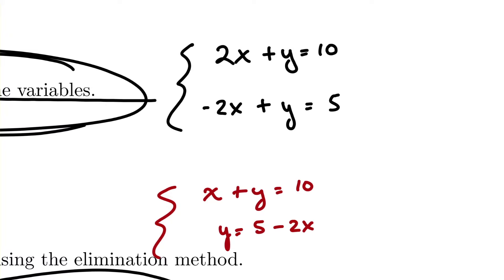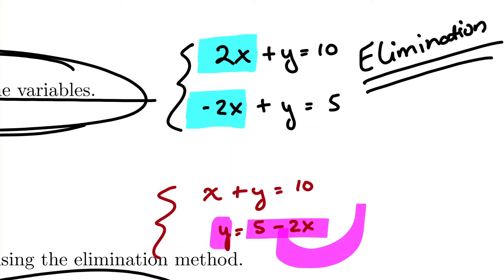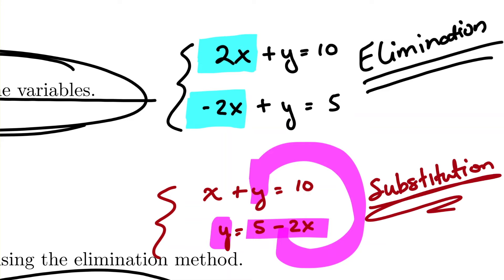To choose between methods: look for a 2x and negative 2x pair — that's set up for elimination, since adding the equations cancels the x terms. If you see a y equals already written, that's substitution — substitute that expression directly into the other equation. Recognizing these patterns with practice will help you pick the more efficient method for each problem.